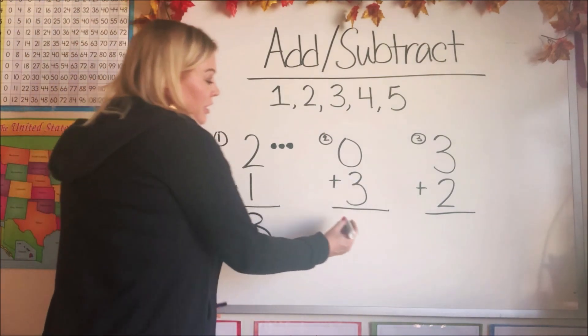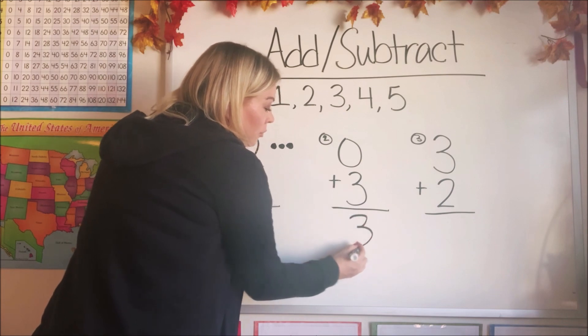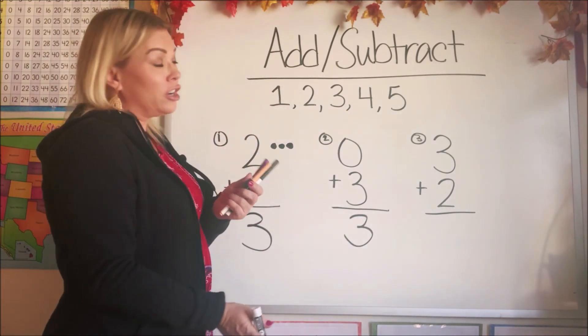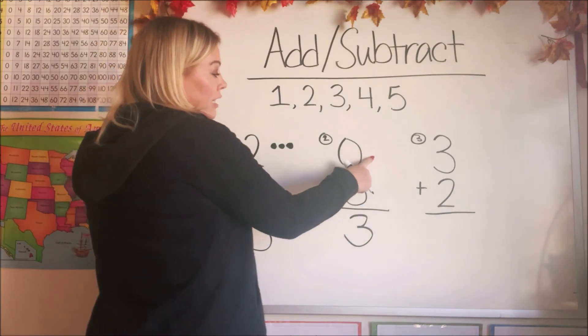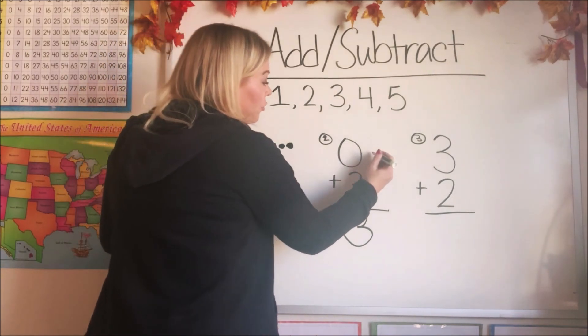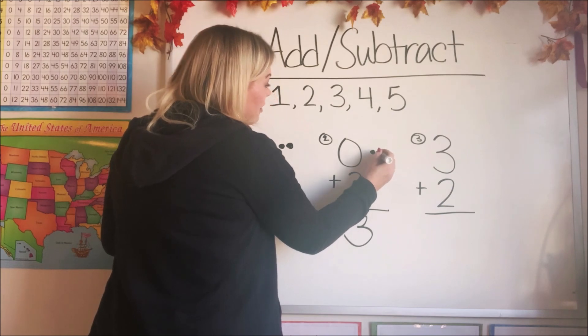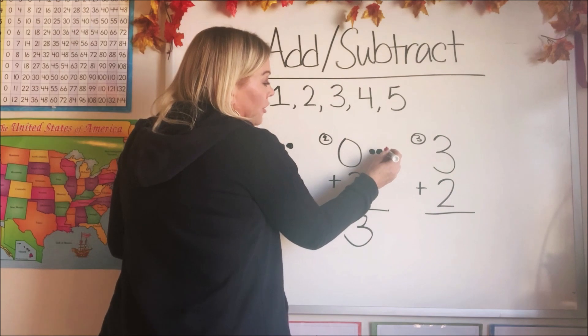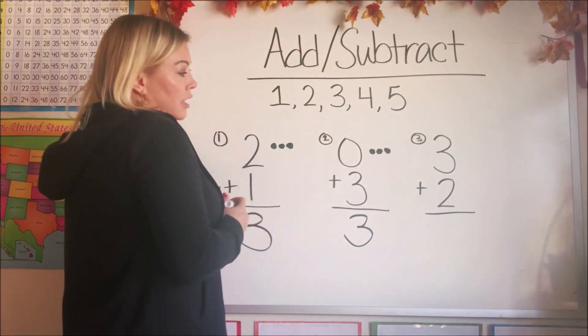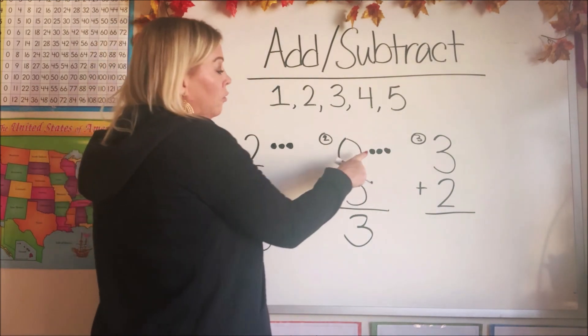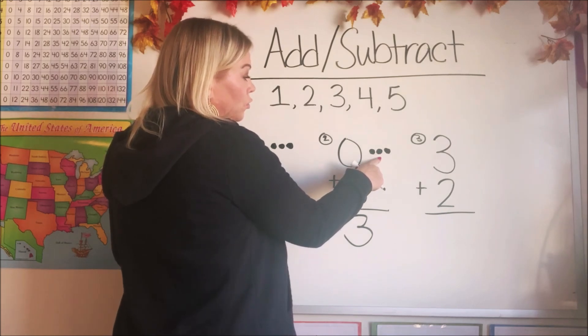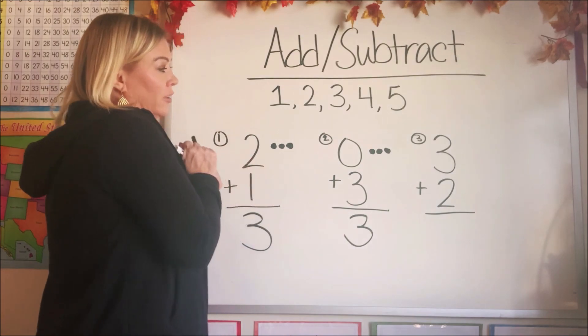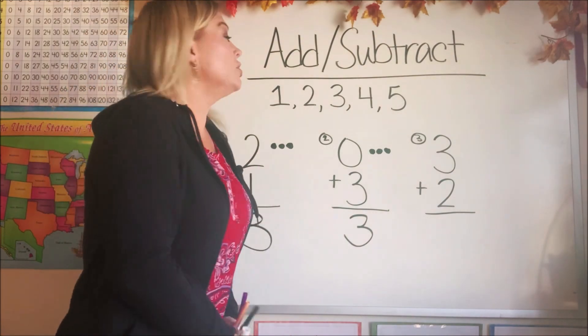Look, our answer is going to be the same as number one. They're both three. Now let's say we didn't have markers. We could just do dots. So zero dots, adding three dots. So if we started with zero, we wouldn't put any dots up for the first number, would we? And then we add three dots. So how many is it total now? One, two, three. We got the same answer. Good job. You guys, this is so easy. You're doing such a good job.